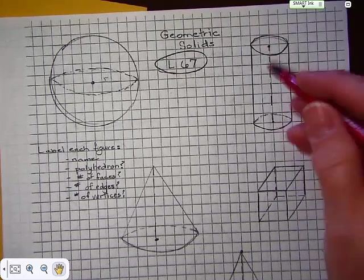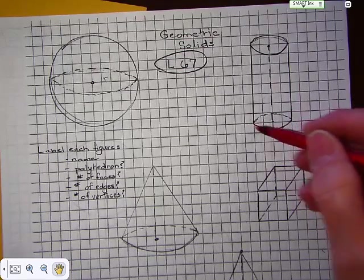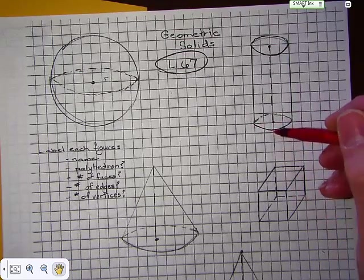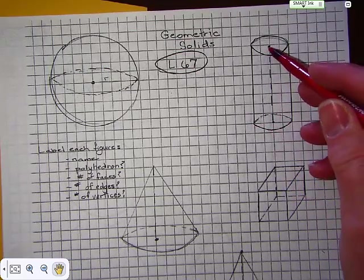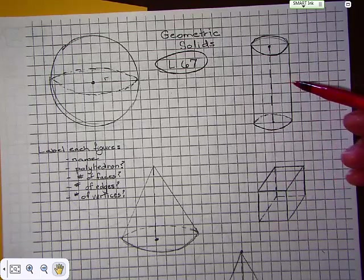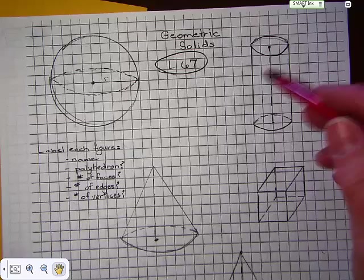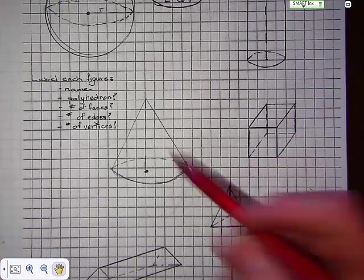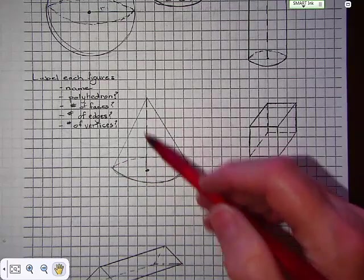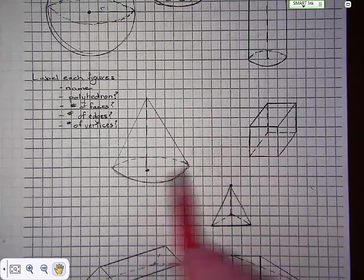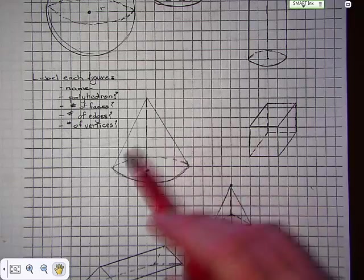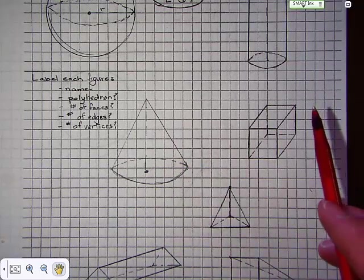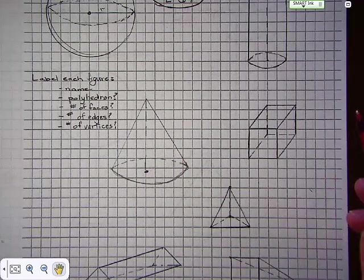If you look at a cylinder, it has a base, and it has height. But it's one of those non-polyhedrons because it has sides that are rounded. Here we have a cone. It has height. It has a base. But it is rounded, so it is a non-polyhedron.